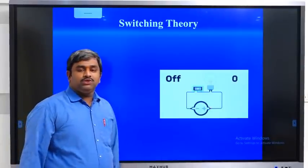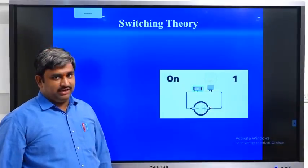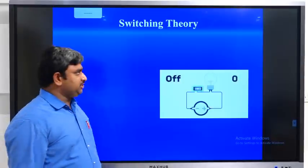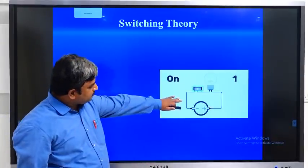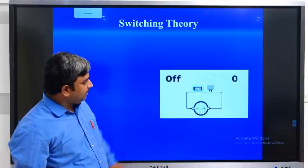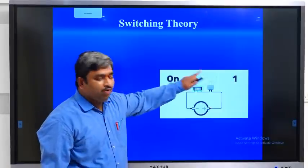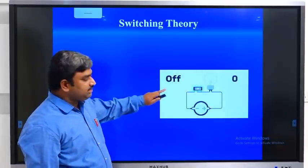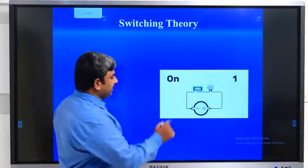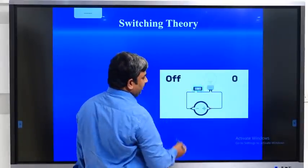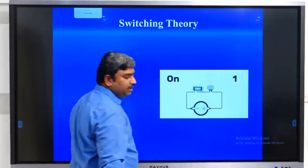So coming to switching theory and logic design — what is meant by switching theory and logic design? Let us see the justification. When the switch is in the off state, there is no glow in the bulb. When the switch is in the on state, there is a glow in the bulb. The on condition I am representing as 1, and the off condition I am representing as 0.